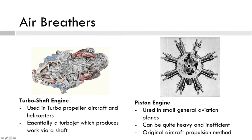The turboshaft is based on the turbojet again, but instead of using high-speed gas for thrust, it spins a shaft at high speed. We attach a propeller and generate thrust that way, as in a turboprop aircraft or a helicopter. They're most commonly used in helicopters and also for power generation. The piston engine is the original propulsion system, used for about the first 40–50 years of aerospace propulsion. This is a V8 in a star configuration — because many early engines were air-cooled, they needed to be spread out like this. They're still used in smaller general aviation planes, though they're quite heavy and inefficient.